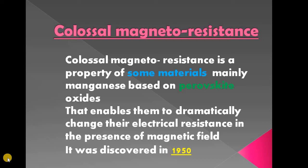Before going to the topic, let us know what is positive magnetoresistance and what is negative magnetoresistance. Positive magnetoresistance is nothing but the effect where specific resistance increases in a magnetic field. And the effect where specific resistance decreases in a magnetic field is called negative magnetoresistance.